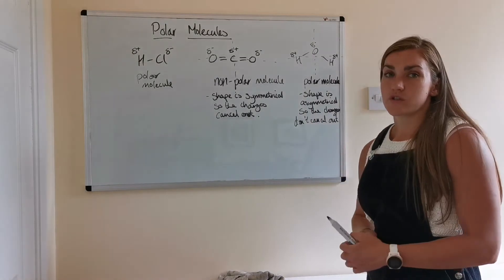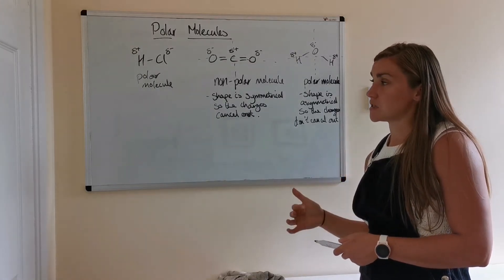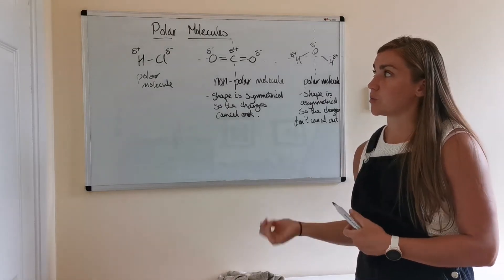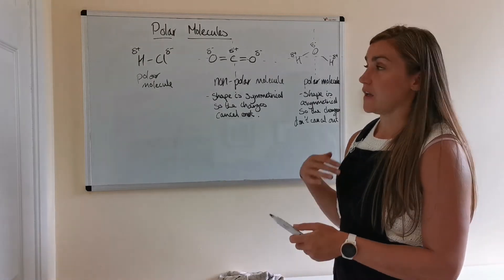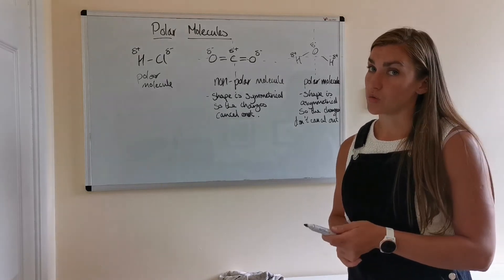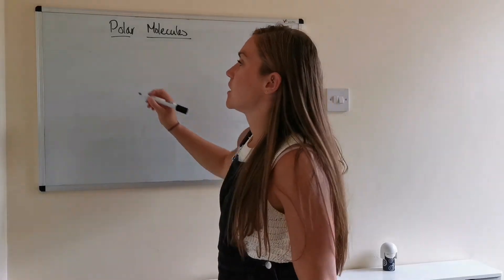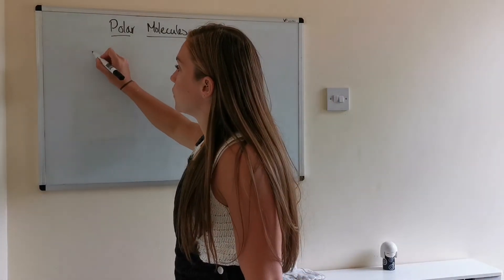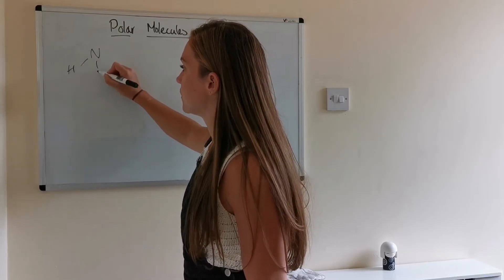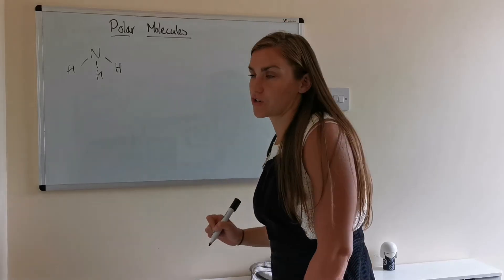From these examples, you can see that if the shape is asymmetrical, then the molecule will be polar. If it's got a symmetrical shape, then the molecule will end up being non-polar. The next example we're going to look at is ammonia — NH3 — that's a nitrogen with three hydrogens, and it adopts a trigonal pyramidal structure.